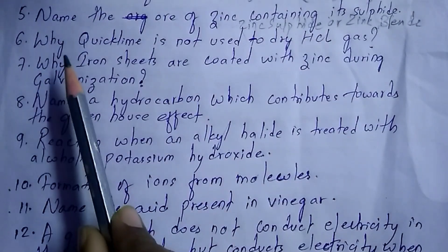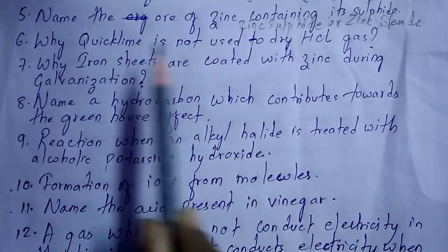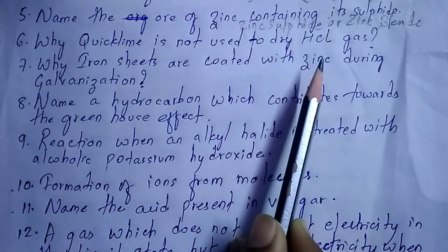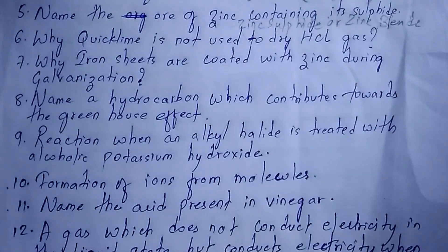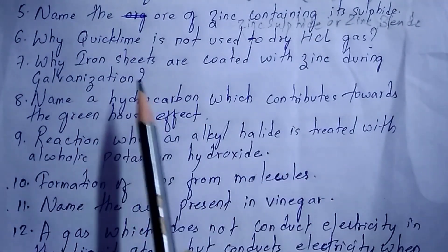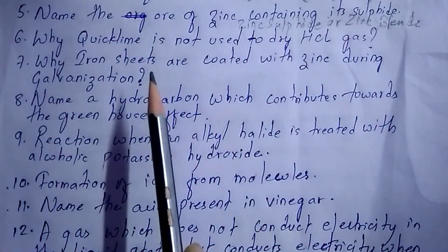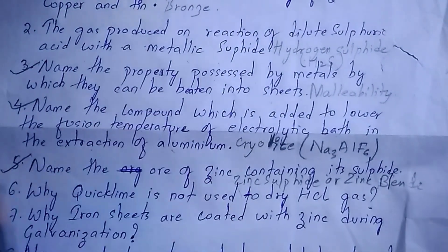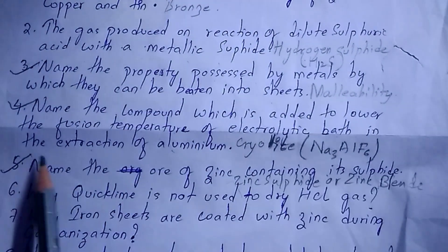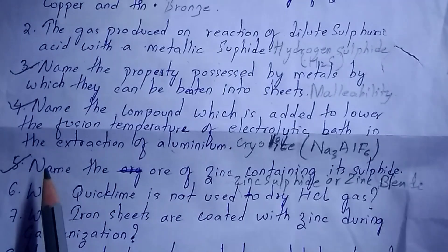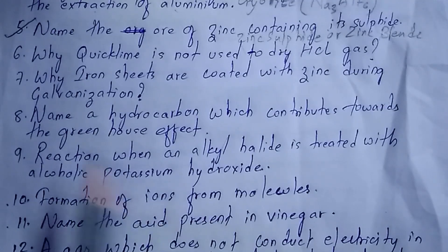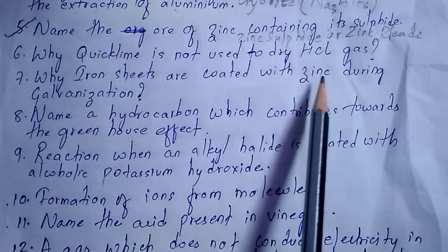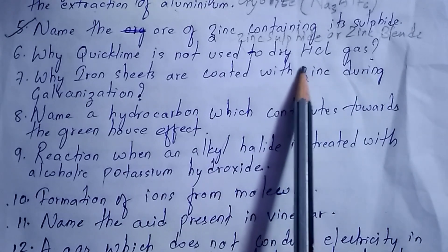Next question: why is quicklime not used to dry HCl gas? These questions are among the very common questions asked from metallurgy in board exams. Quicklime is not used to dry HCl gas because quicklime is alkaline in nature.